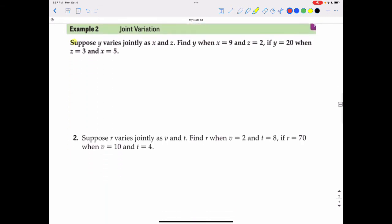Suppose y varies jointly as x and z. That means y is going to be on one part of the fractions in the numerator, and then the product of x and z will be on the other portion of the fraction in the denominator. Then we're going to find y when x equals 9 and z equals 2. So that would be 9 times 2 in the denominator. Then we set that equal to if y is 20. So y would be 20 in the numerator of the second fraction over when z is 3 and x is 5. So that would be 5 for x times 3 for z. And there's the initial setup.